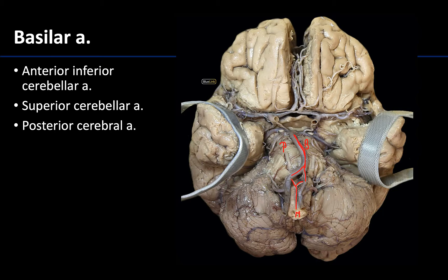There are three branches of the basilar artery that we want you to identify. The most proximal is going to be the anterior inferior cerebellar artery — you will sometimes see this referred to as AICA. This is fairly close to where the basilar artery forms, so not too far from the vertebral arteries. These are typically smaller than PICA but will often form anastomoses with PICA, and they are fairly closely associated with the abducens nerve, or cranial nerve 6.